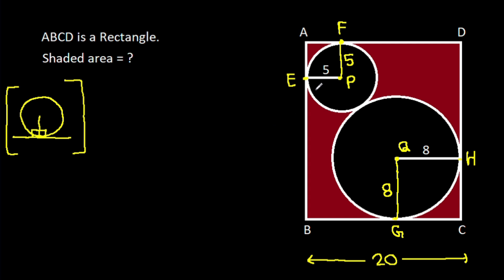So PE is perpendicular to AB, PF is perpendicular to AD, QG is perpendicular to BC, and QH is perpendicular to CD.